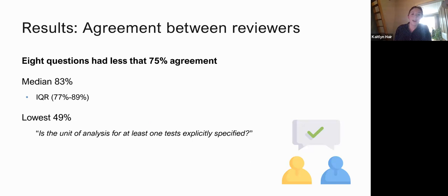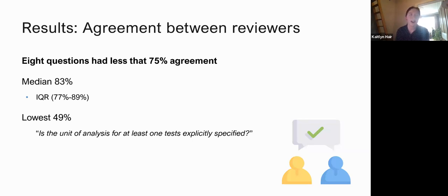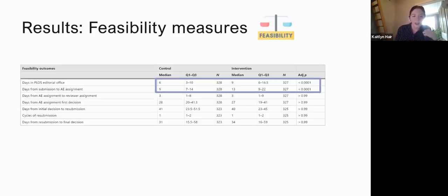We also looked at agreement between reviewers assessing the manuscripts. The median agreement was around 83%, which is quite high. However, we identified eight checklist questions with less than 75% agreement, indicating that some things in the ARRIVE checklist aren't easy to conceptualize and people find them difficult to evaluate — they were quite subjective. One of the lowest was 'Is the unit of analysis for at least one test specified?' — there was less than chance agreement on that question.